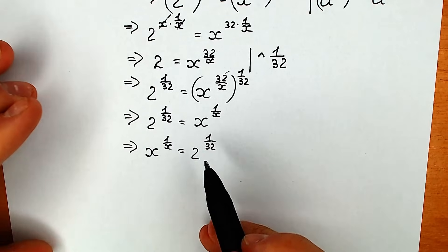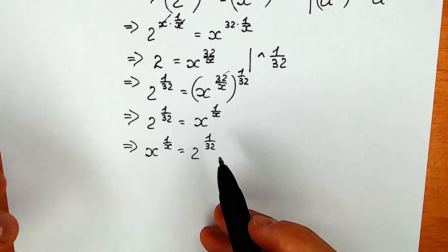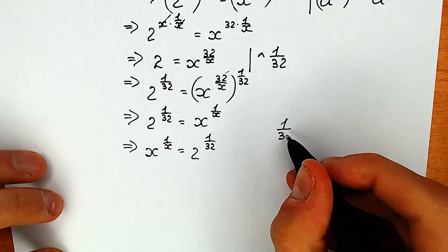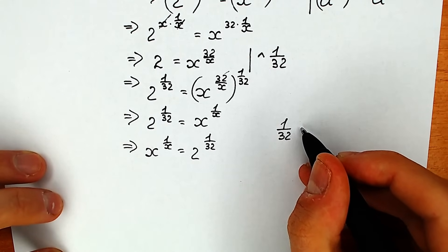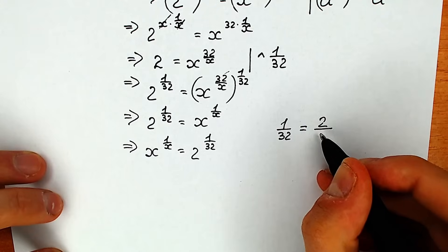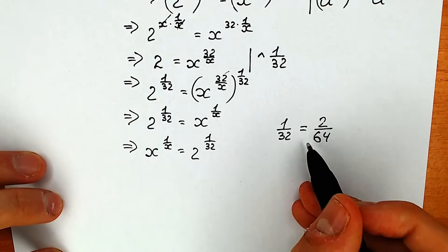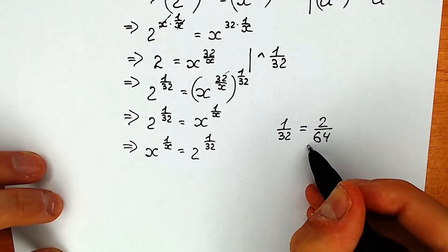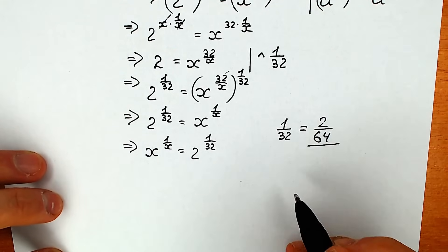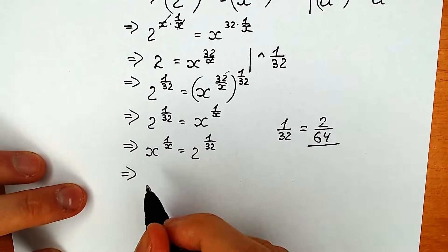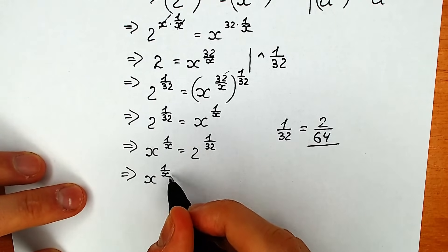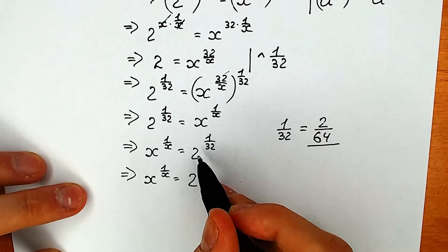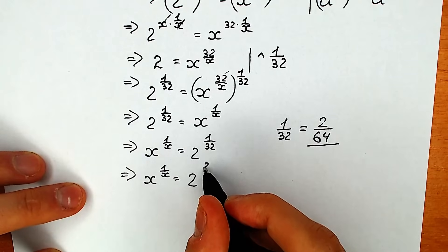Now let's transform the expression on the right side. Instead of the power 1 over 32, I want to write 2 over 64, which is absolutely the same thing. When we cancel by 2 we get the same expression. So we have x to the power 1 over x equal to 2 to the power 2 over 64. Instead of 1 over 32, I'm going to write 2 to the power 2 over 64.